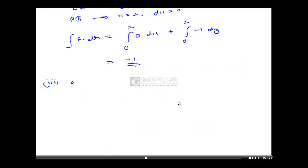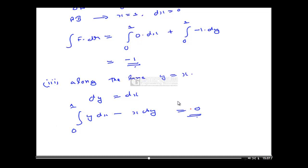Third case: along the straight line y = x. Then dy = dx, and substituting into y·dx minus x·dy, the result is 0. So the value of the integral depends on the path chosen. When this happens physically, these are called non-conservative fields. If the integral is independent of the path, it is a conservative field — that is the physical significance.